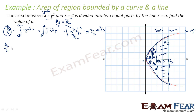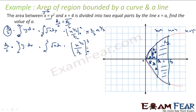A2/2 = ∫(a to 4) √x dx = [x^(3/2) / (3/2)] from a to 4 = (2/3) · [4^(3/2) − a^(3/2)]. Since 4^(3/2) = 2³ = 8, this gives A2/2 = (2/3) · (8 − a^(3/2)).